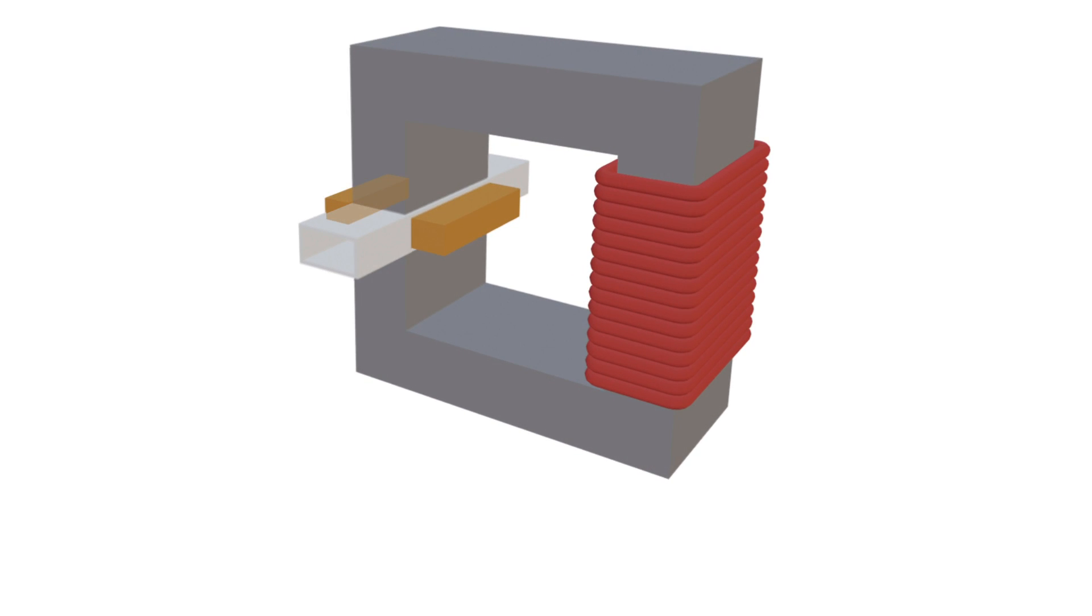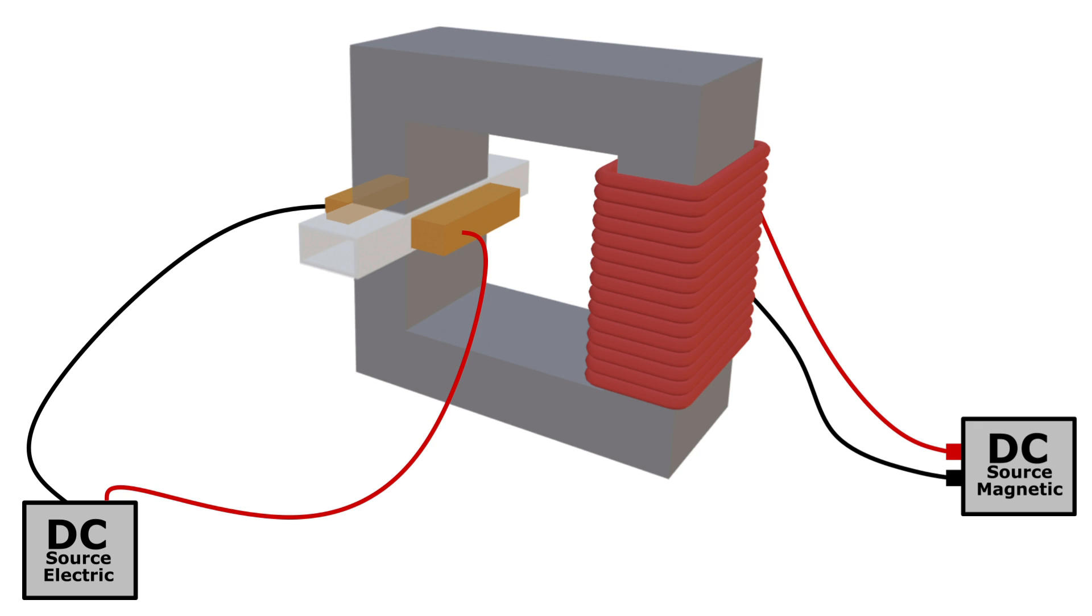We'll add two DC power supplies for the electromagnet and the current flow. AC can also be used, but that's a completely different setup. We'll add a drum to catch the fluid, but note that this is not part of the EM pump.